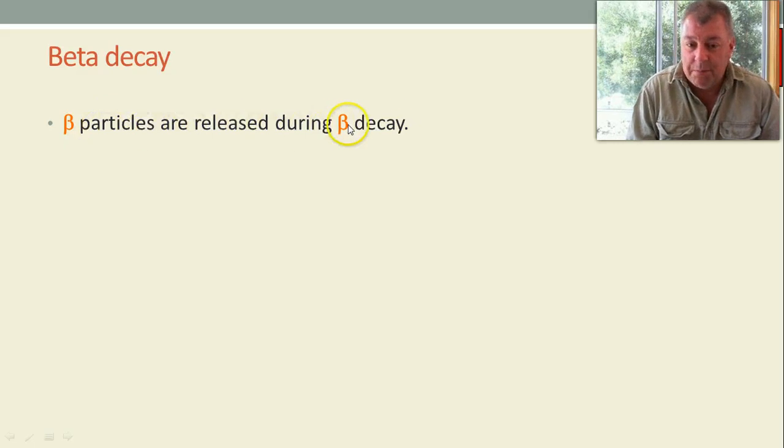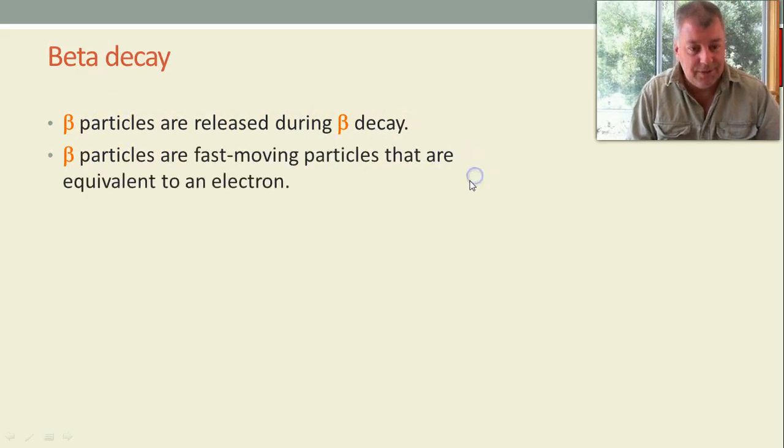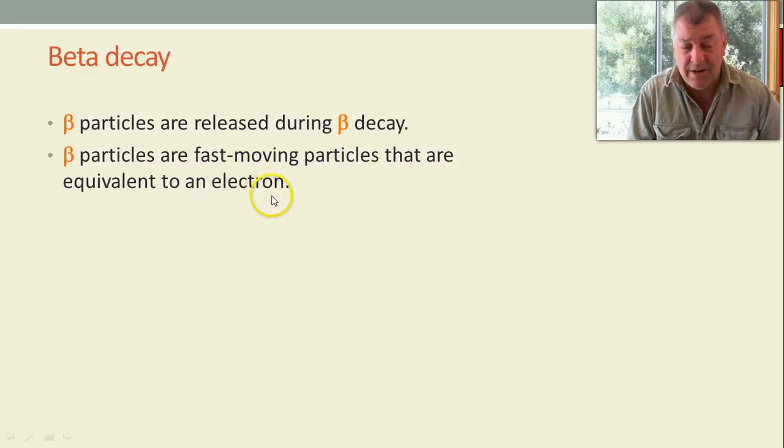Beta particles are released during Beta Decay. Pretty obvious. Now, what are Beta particles? They are fast moving particles that are equivalent to an electron, they are an electron.